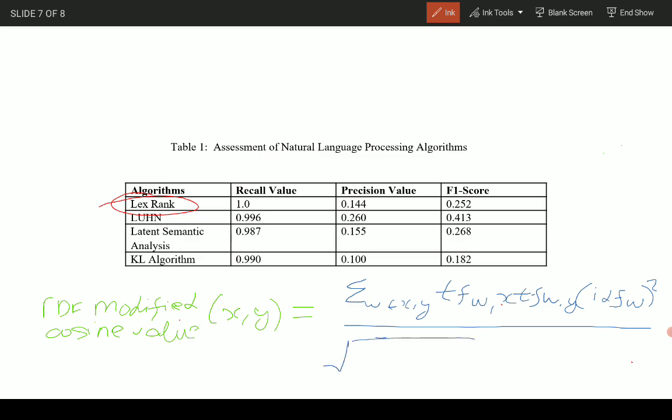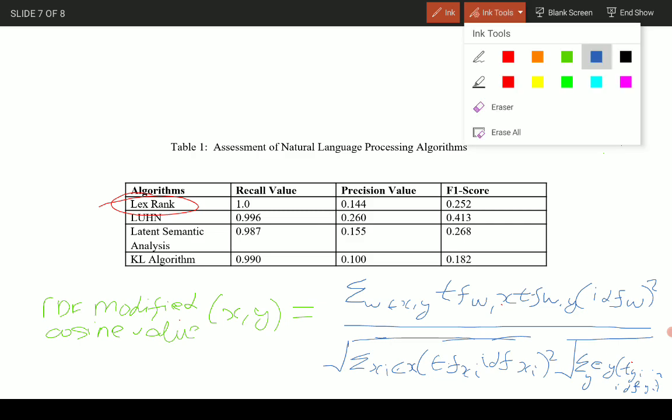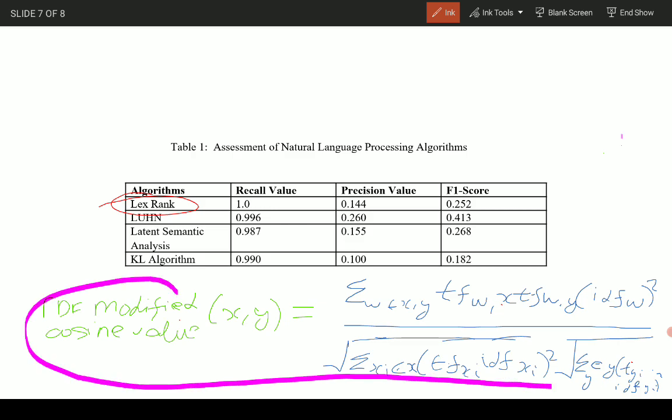This is given by the square root of summation of xi element of x, tf(xi) times idf(xi) whole squared, multiplied by square root of summation of yi element of y, tf(yi) times idf(yi) whole squared. This is the general expression for calculating the IDF value.